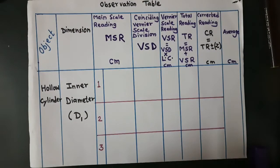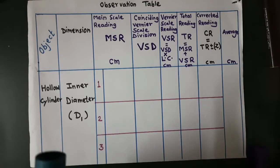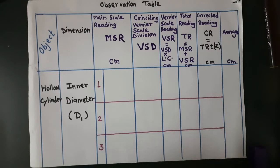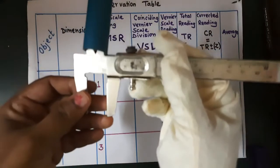Now see the observation table for the hollow cylinder dimensions. The column headings are: MSR — main scale reading, VSD — coinciding Vernier scale division, VSR — Vernier scale reading, total reading, corrected reading, and finally average. First, we will find the inner diameter of this hollow cylinder.